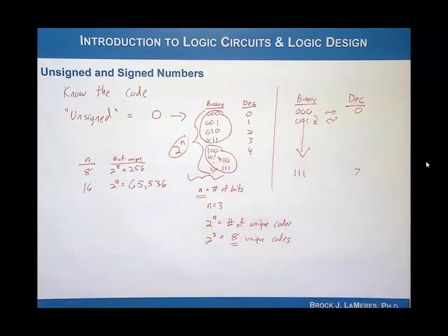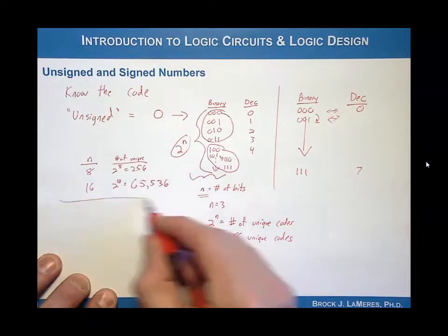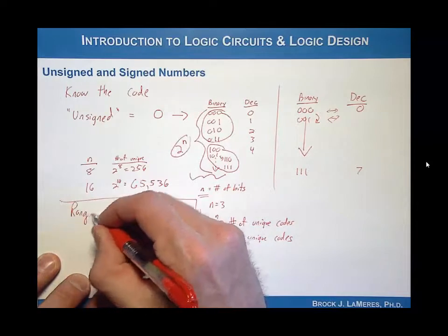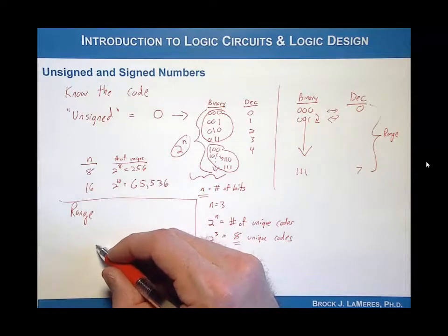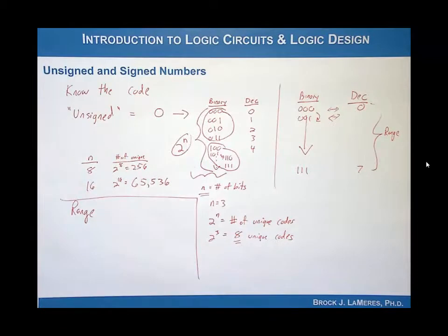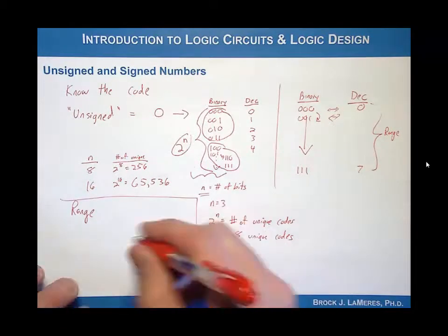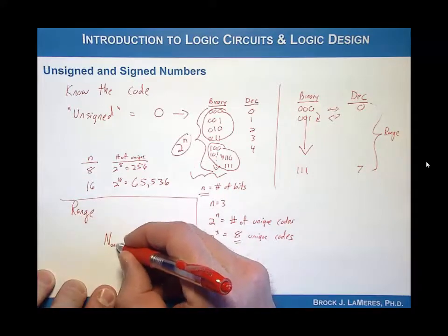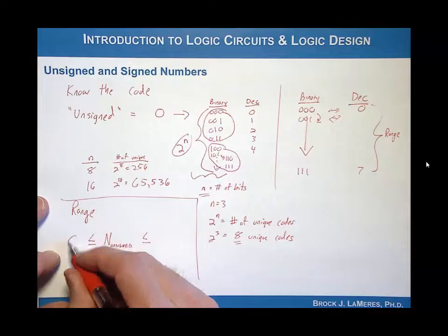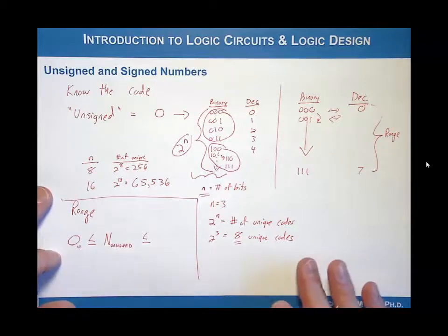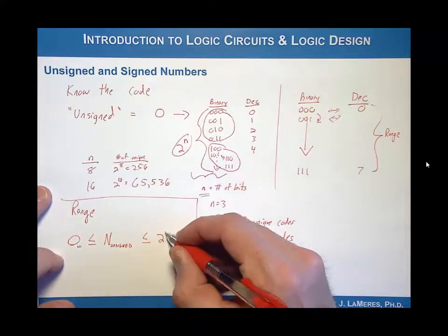When we talk about an encoding technique for numbers, we also want to look at the range of values that can be represented. The range is very important — it's not only how you encode the information, but also what numbers in decimal you can represent. We'll call uppercase N the number that can be represented in an unsigned binary code. The range of unsigned goes from zero up to two to the n minus one.